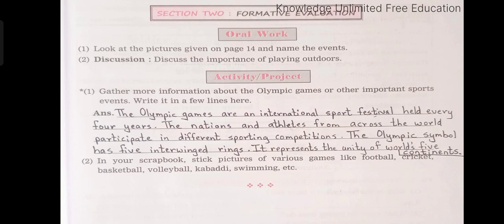Activity project: Gather more information about the Olympic Games or other important sports events and write it in a few lines. Answer: The Olympic Games are an international sports festival held every 4 years. Nations and athletes from across the world participate in different sporting competitions. The Olympic symbol has 5 interlinking rings, representing the unity of the world's 5 continents. That's all for your lesson — Khashaba Jadhav.